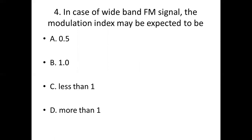Fifth bit. While demodulating PCM, it is first converted into: Option A, PAM. Option B, PPM. Option C, PWM. Option D, none of the above. Answer: Option A, PAM.